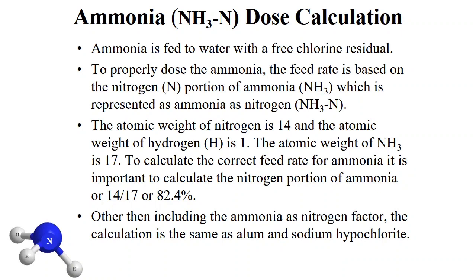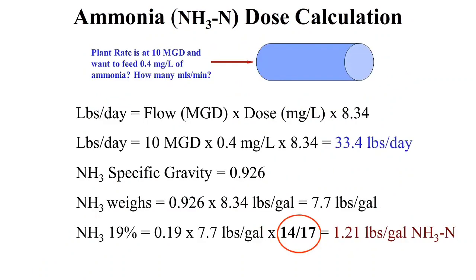Other than adding the ammonia-as-nitrogen factor, the ammonia feed rate calculation is the same as alum and sodium hypochlorite: pounds per day equals flow in MGD times milligrams per liter times 8.34. In this example, we determine the feed rate for a dose of 0.4 milligrams per liter at 10 MGD. Multiplying 10 times 0.4 times 8.34 gives 33.4 pounds per day. Ammonia has a specific gravity of 0.926 — lighter than water — weighing about 7.7 pounds per gallon. At 19% concentration, we add the 14/17 nitrogen factor to get 1.21 pounds per gallon.